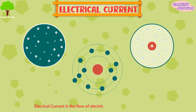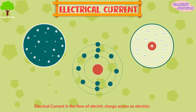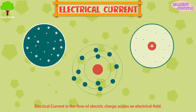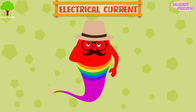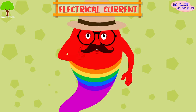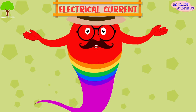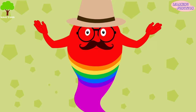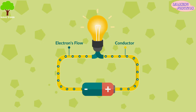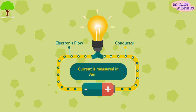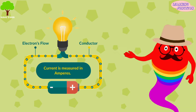Electrical current is the flow of electric charge across an electrical field. Now let's learn about electrical current in detail. Current is the rate of flow of electrons. It's produced by moving electrons and it's measured in amperes.